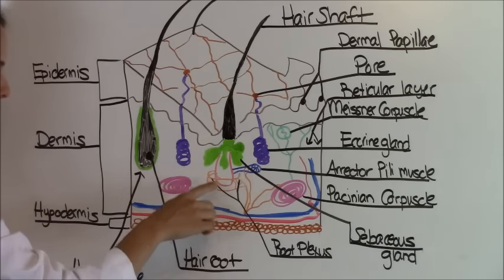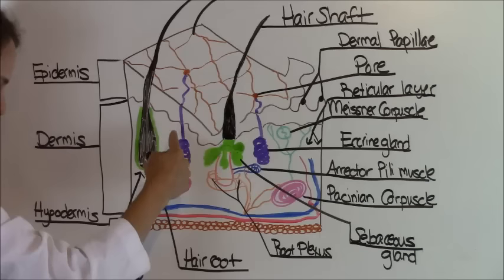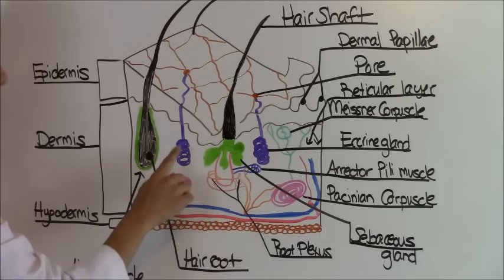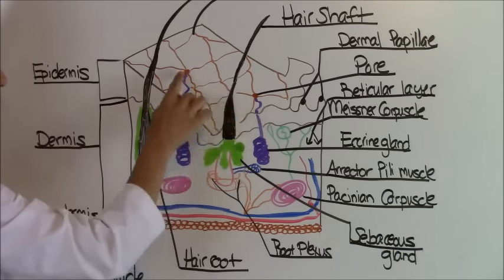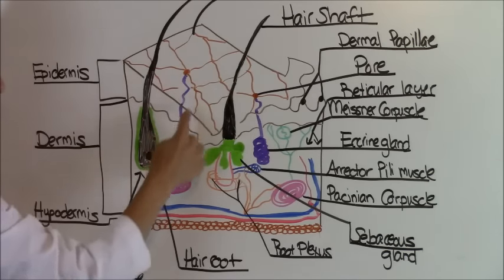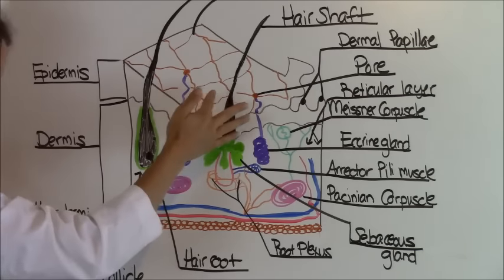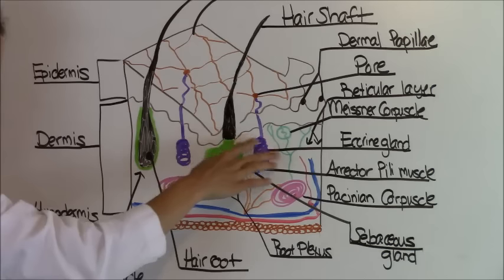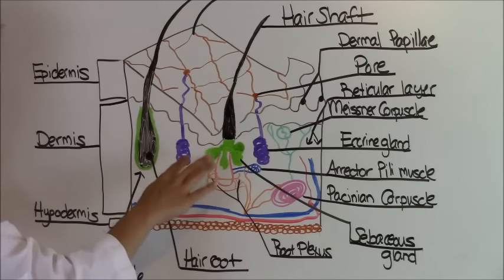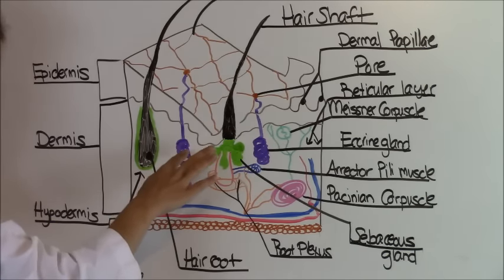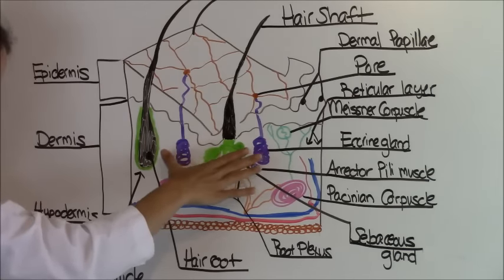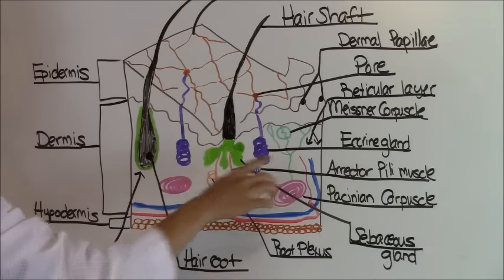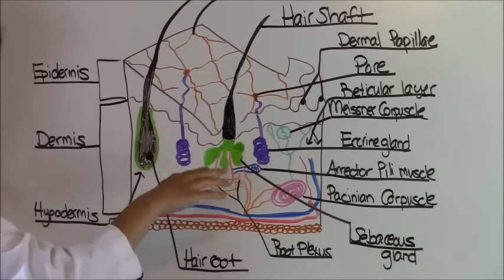Next, we're going to go to what's called the sweat glands, also called sudoriferous glands, and they produce sweat. Notice we have a pore right here and this little purple thing going down is a sweat gland because you sweat out of your pores. Sweat glands are found everywhere except on the nipples or parts of the external genitalia.